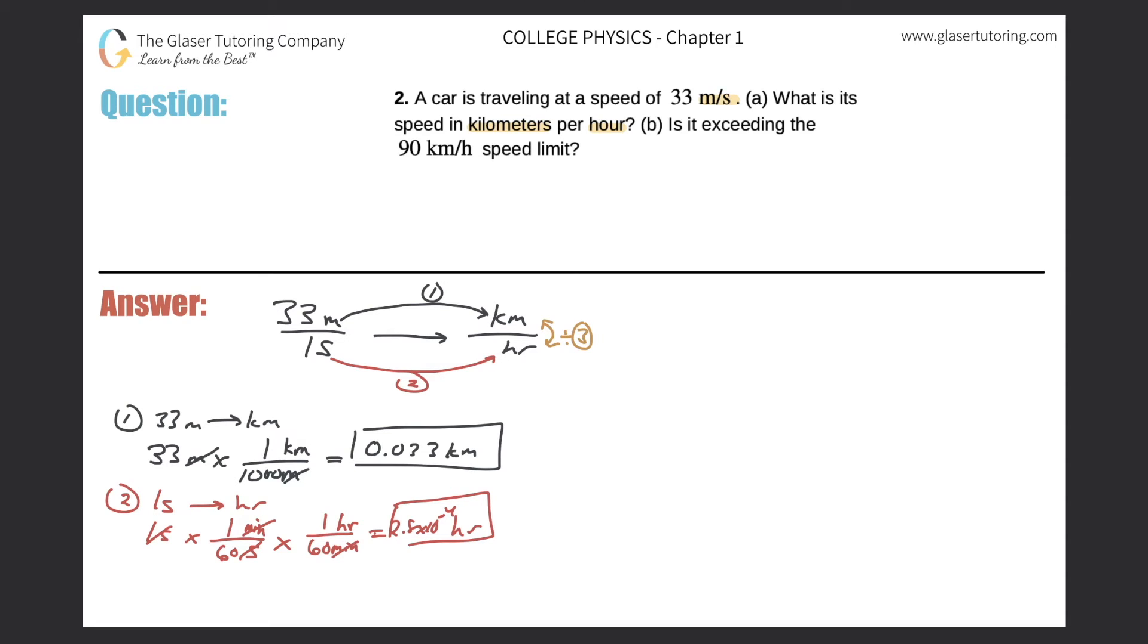And third step now is cake. So cake sounds good right about now. Anyway, 0.033 kilometers divided by our answer to step 2, which would be 2.8 times 10 to the minus 4 hours.